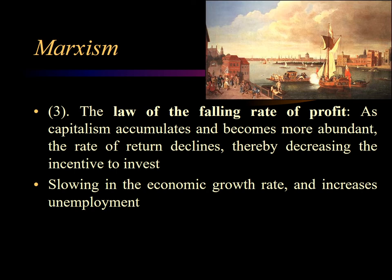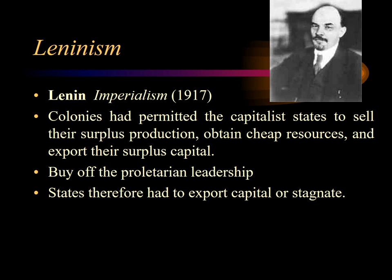Marx's predictions of world revolution were largely disconfirmed by the proletariat's support for the nationalist conflict in 1914. Marx also could not explain how wages were rising just prior to the period of 1870 to 1914. An addendum was made to the theory by Vladimir Ilyich Lenin in his 1917 book Imperialism. He argued that capitalism had escaped the three laws through overseas investment. Colonies had permitted the capitalist states to sell their surplus production, obtain cheap resources, and export their surplus capital. The economic surplus permitted the capitalists to buy off the proletariat leadership, and states therefore had to export capital or stagnate.